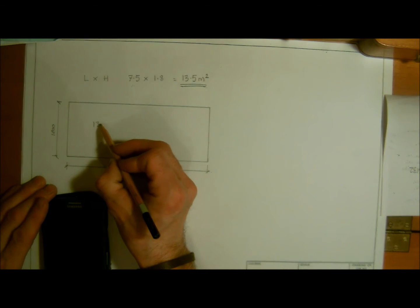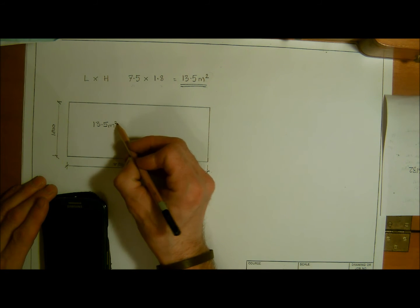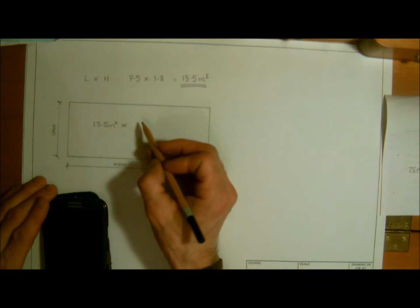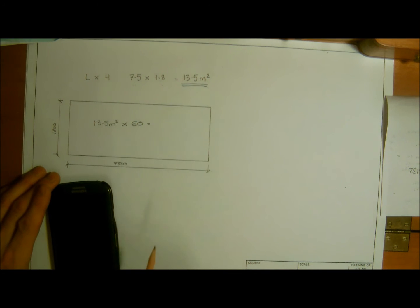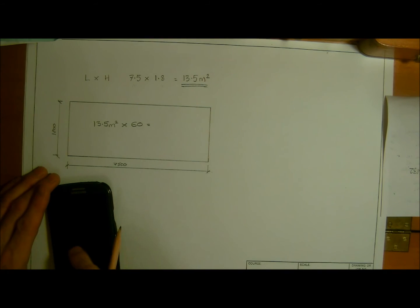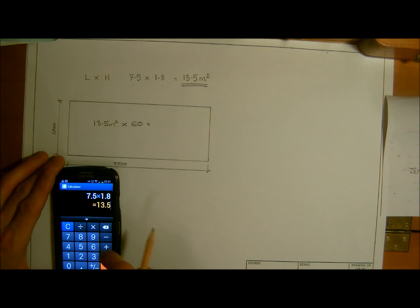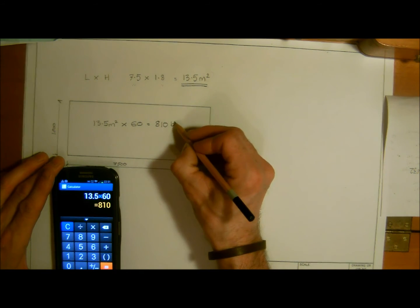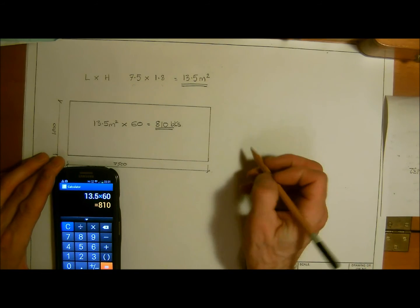Now again, we want to find out how many bricks we've got in here. So we have our 13.5 meters squared times by—we said stretcher bond, so we know stretcher bond has 60 bricks per meter squared. So we've got 13.5, multiply that by 60, equals 810 bricks.